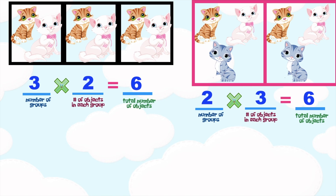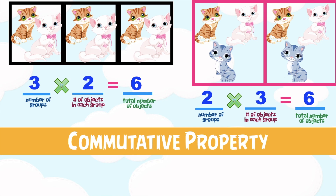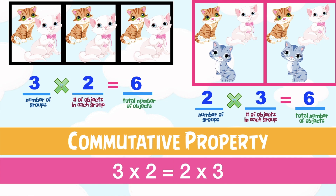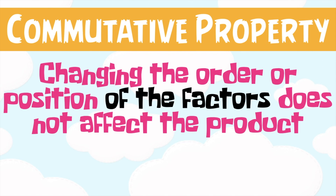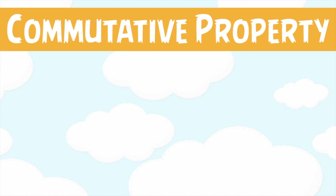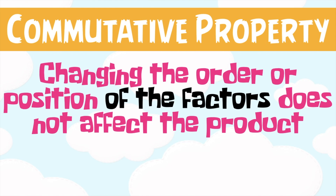Again, children, this is what we call the commutative property of multiplication. It states that the order of the factors does not affect the product. So 3 times 2 is equal to 2 times 3, and they are both equal to 6. Always remember: commutative property — changing the order or position of the factors does not affect the product.